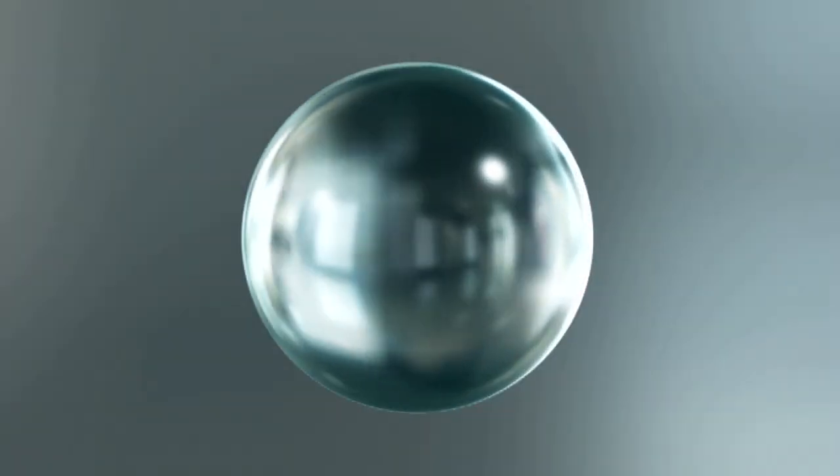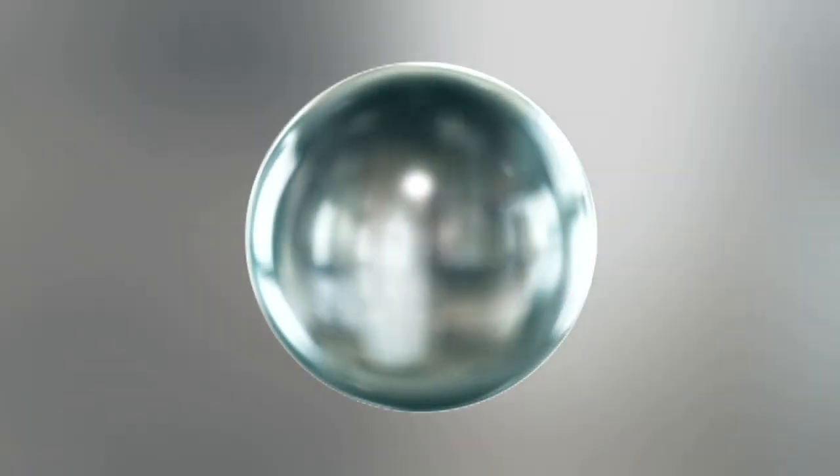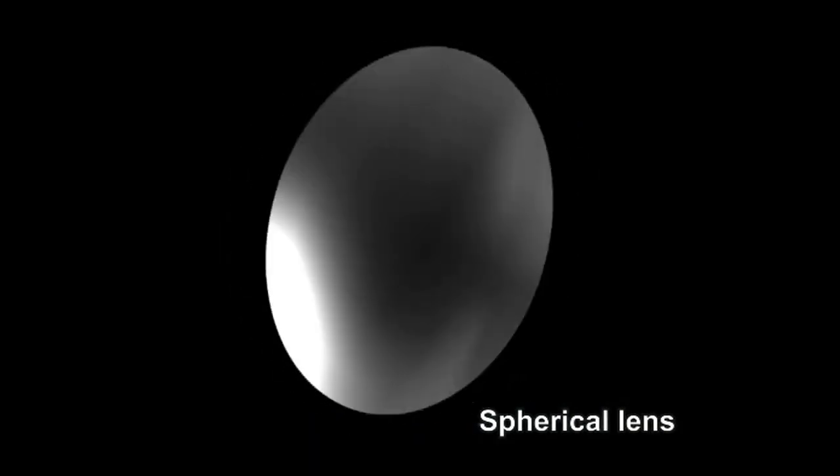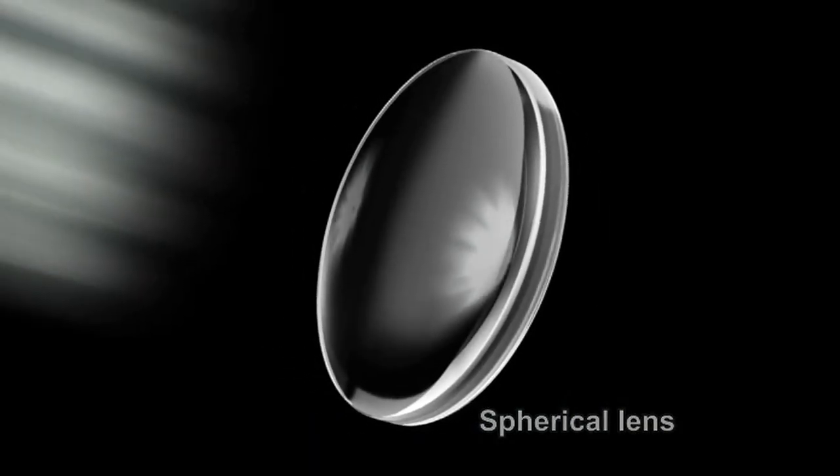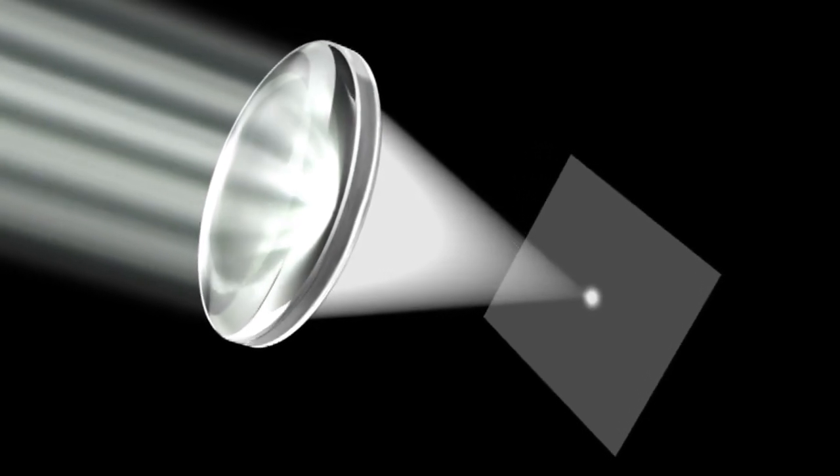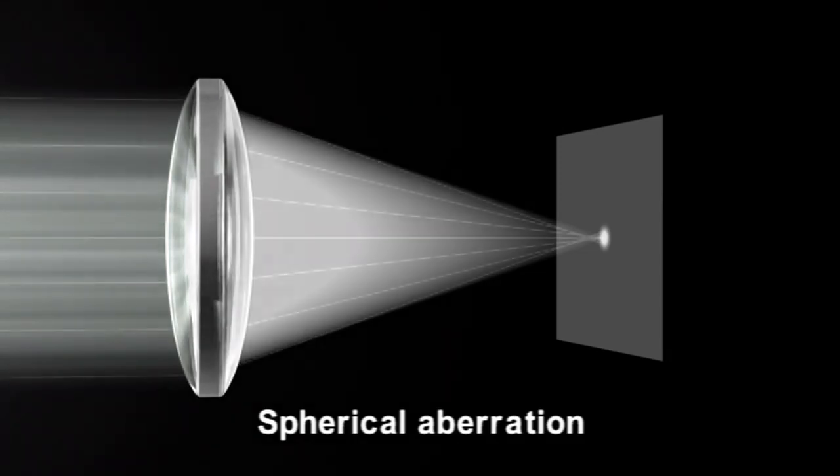The ideal lens is one in which incoming light meets at a single point. In the past, a variety of spherical lenses, cut from the surface of a sphere, were used to accomplish this. With spherical lenses, however, the incoming light doesn't meet at a single point. It is spread out slightly. This is known as spherical aberration.